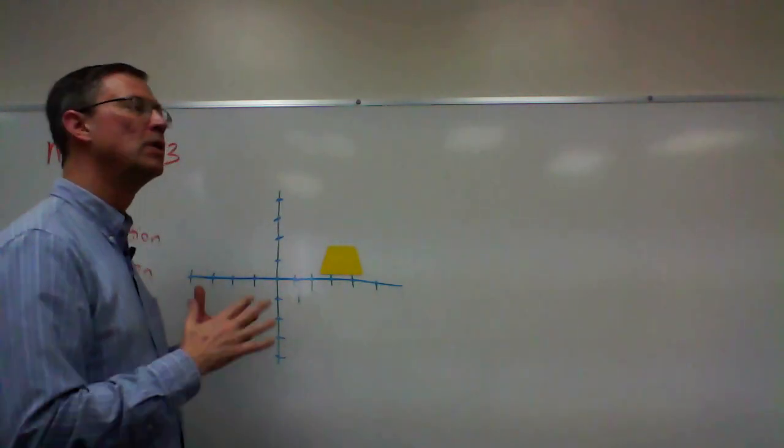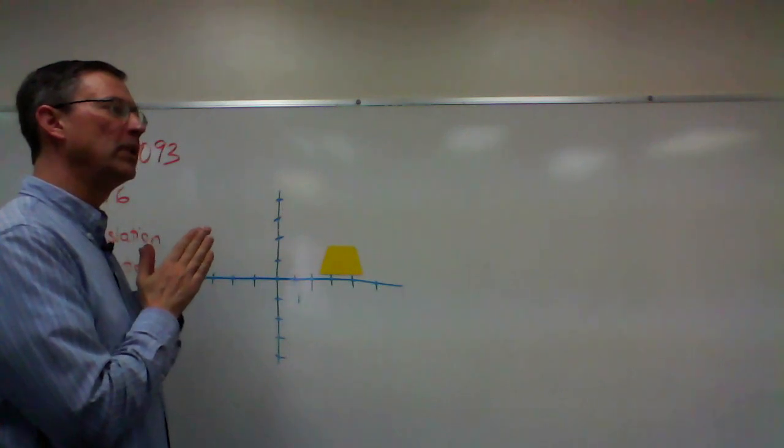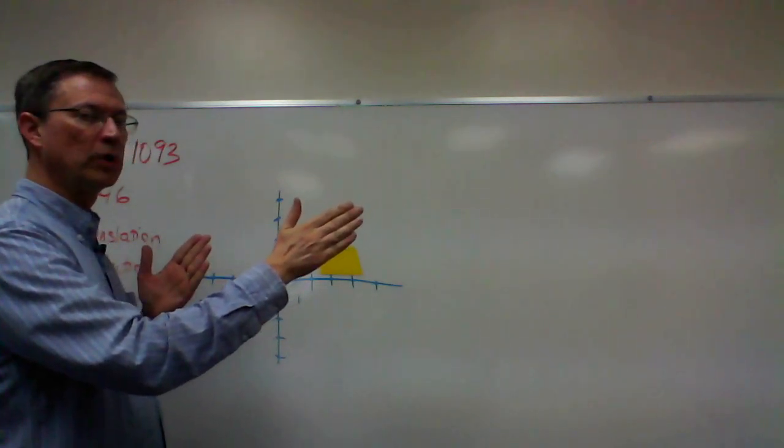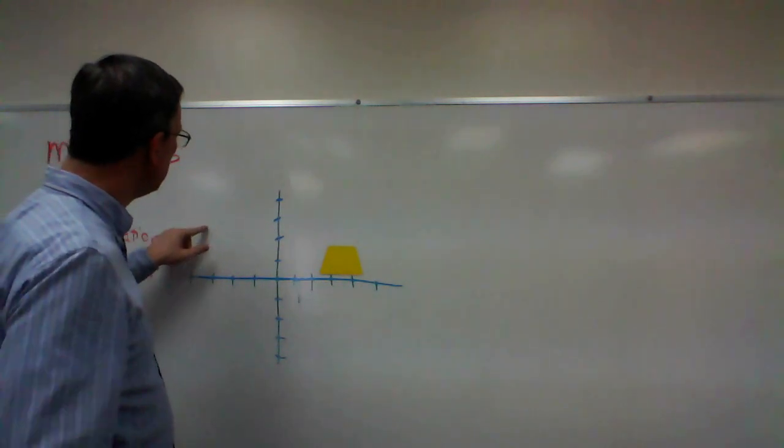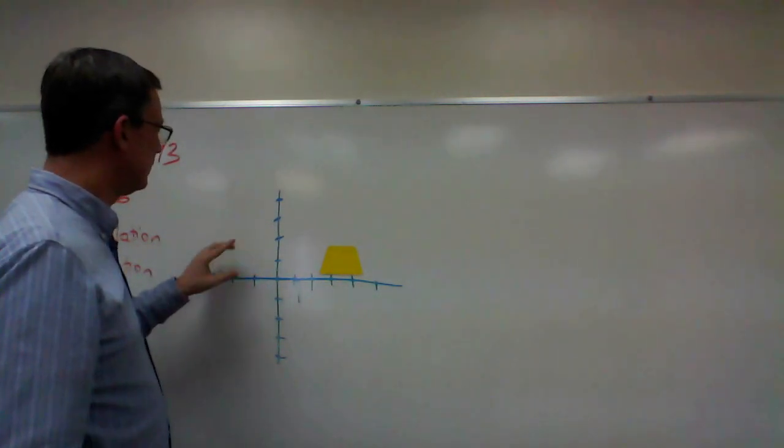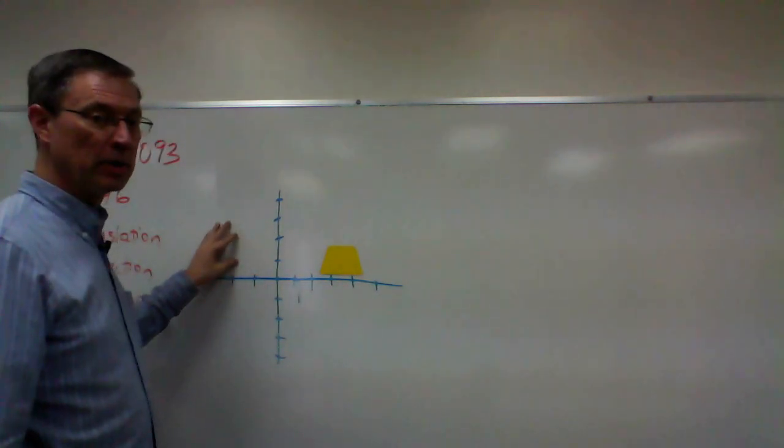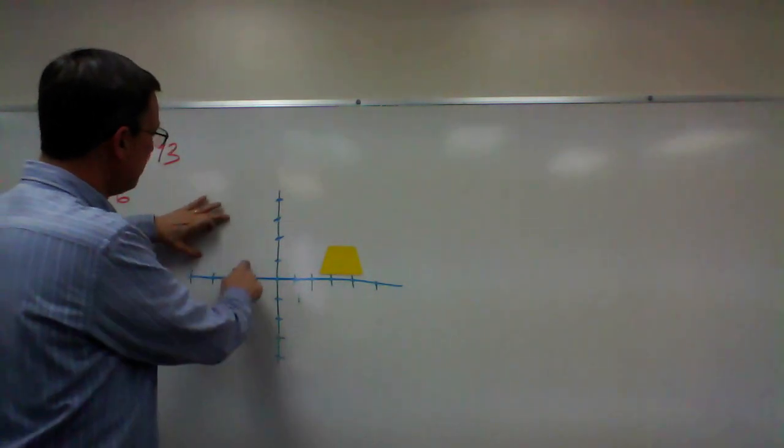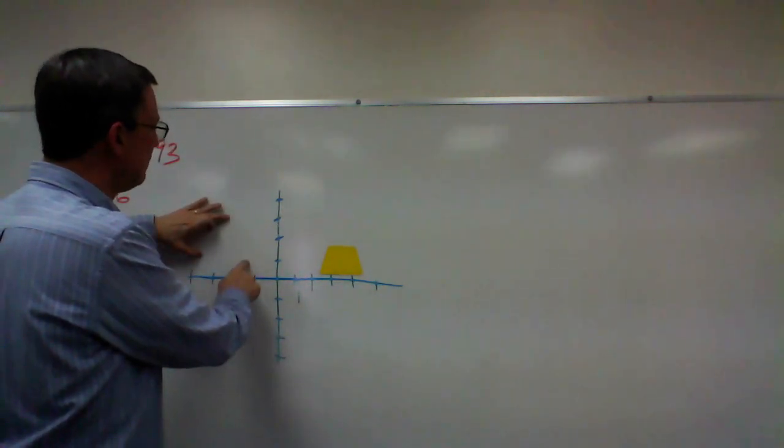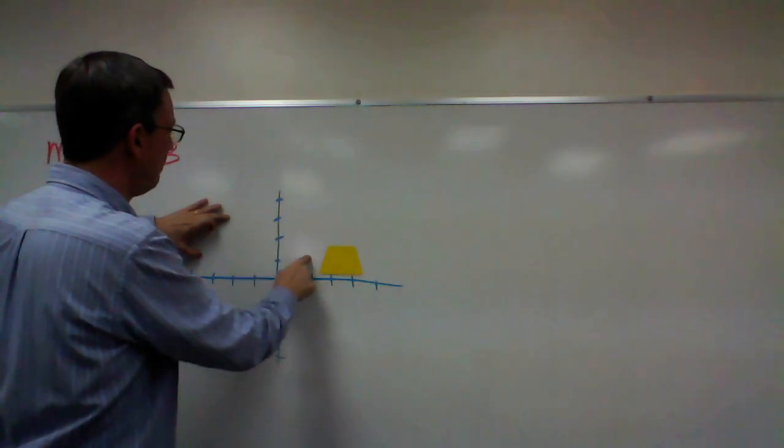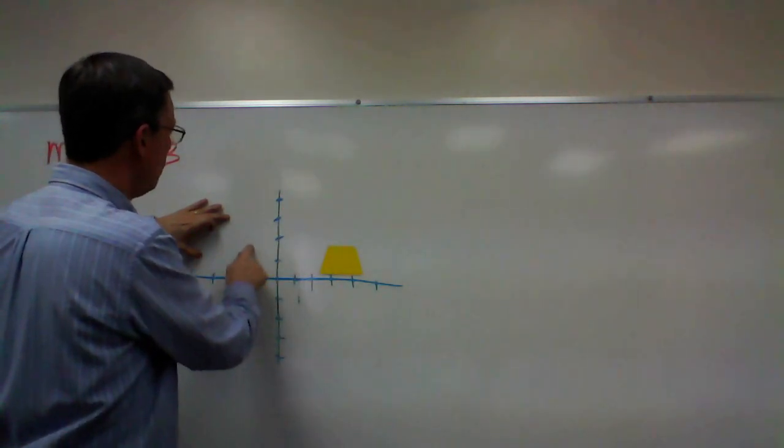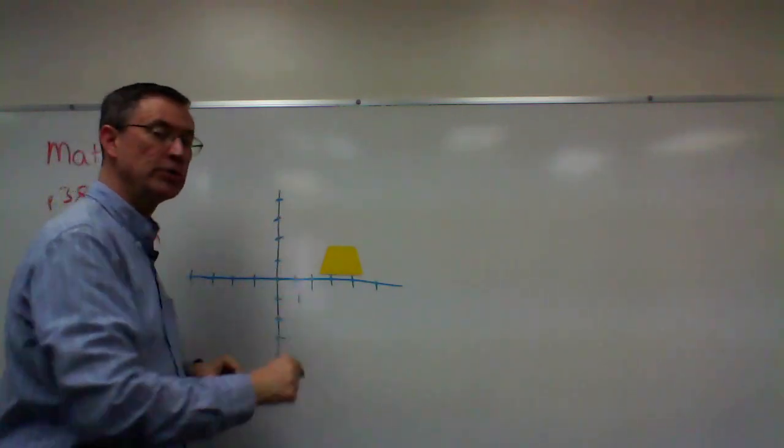The directions will always tell you how many places over and how many places up or down to move. You're going to take each of the coordinates of that shape, maybe it's a triangle, so you'll take each of those three points and do the same thing—maybe over four, up one. Take this one over four, up one, this one over four, up one, and then you label those three points.